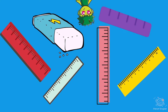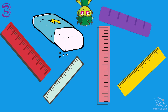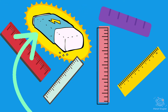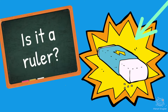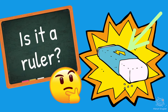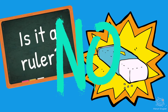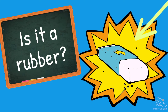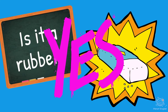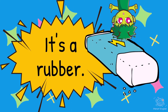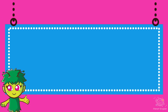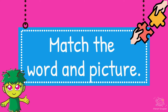Where is the odd one out? Five, four, three, two, one! Is it a ruler? No! Is it a rubber? Yes! It's a rubber! Now match the word and picture!